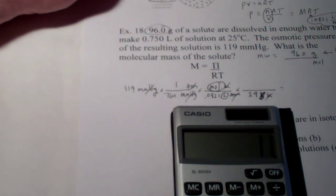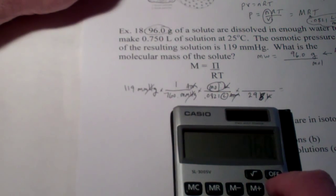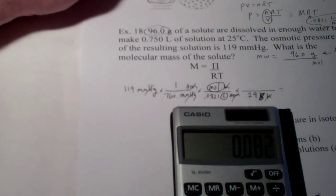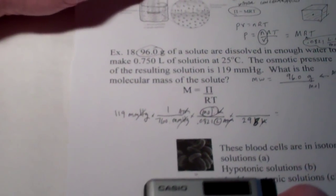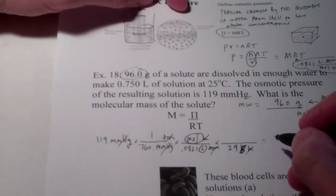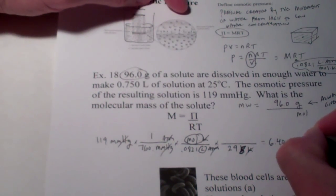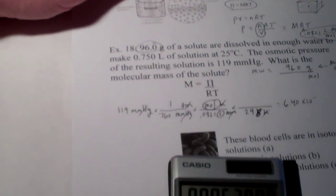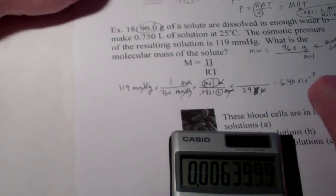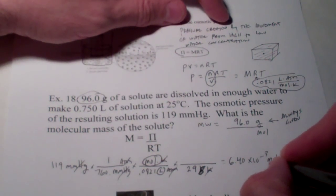We have 119 divided by 760 divided by 0.0821 divided by 298. That gives me, to three significant figures, 6.40 times 10 to the negative 3. Now, that unit is molarity, which is moles per liter.